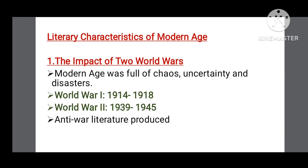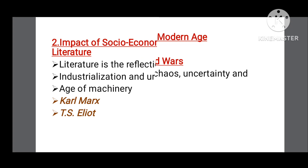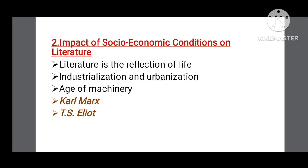Moreover, because of the war, unemployment increased, which in turn increased mental and physical stress. All these events are reflected in the literature of that time. We can see it in the works of Virginia Woolf, such as her novel 'To the Lighthouse,' T.S. Eliot's 'The Waste Land,' and in the works of John Galsworthy. The second literary characteristic is the impact of socioeconomic conditions on literature.